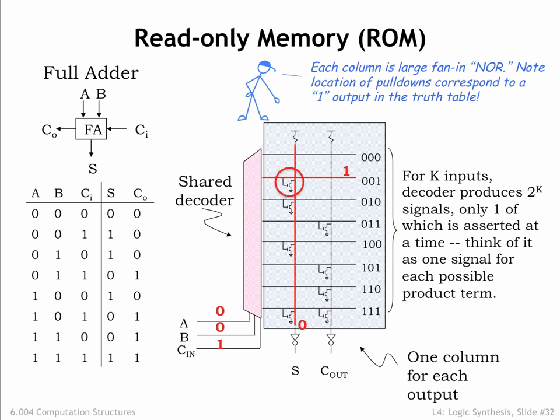The Cout vertical column is not pulled down, so it will be high. After the output inverters, S will be 1 and Cout will be 0, the desired output values.